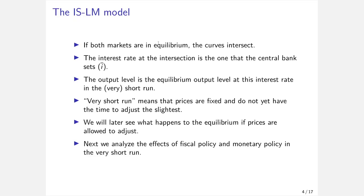I refer to this as the very short run, which is a slight departure from standard textbooks that call it the short run. I want to distinguish the time horizon over which prices are fixed — the very short run, where firms cannot adjust prices — from the short run, where prices adjust but not fully to the new equilibrium. When prices and price expectations both have time to adjust, that is the medium run. And the long run is where money is completely neutral and we can abstract from prices altogether.